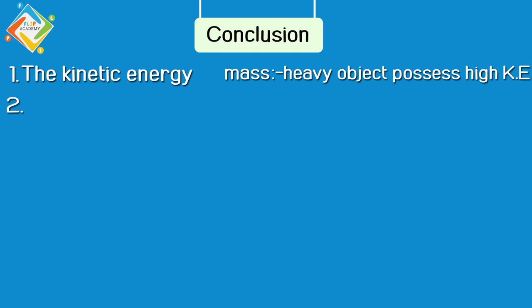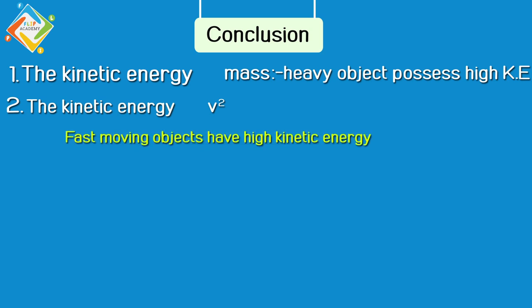Similarly, second point we conclude: kinetic energy is directly proportional to V square. That means the higher the velocity of the object, the higher the kinetic energy. If we talk about a bullet, its velocity is very high, so its kinetic energy will be very high.